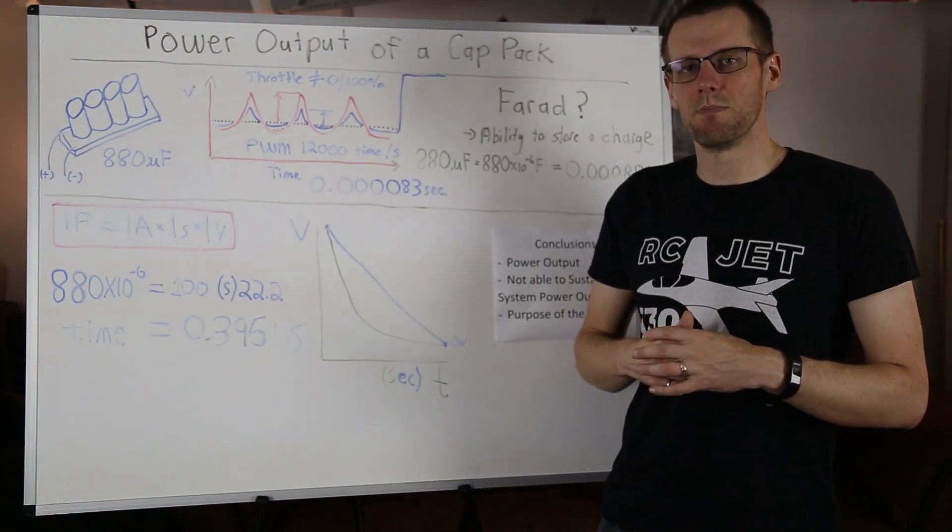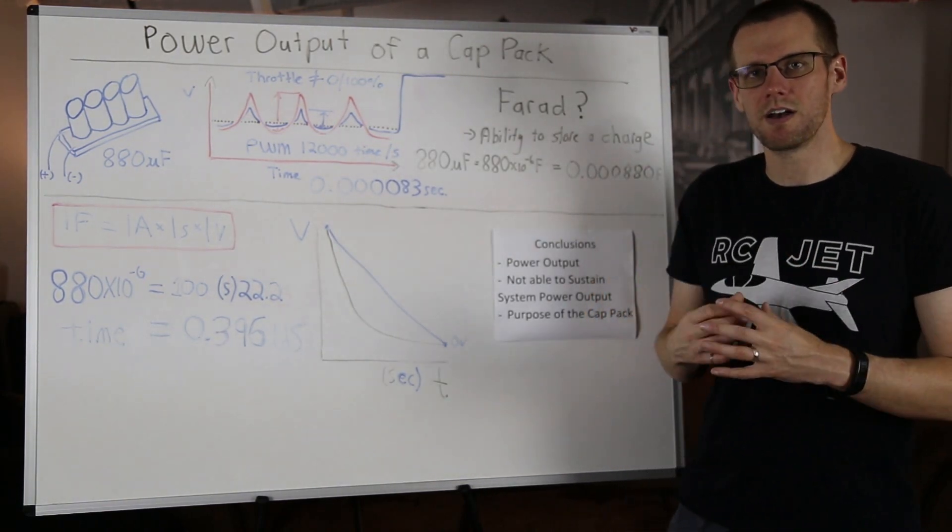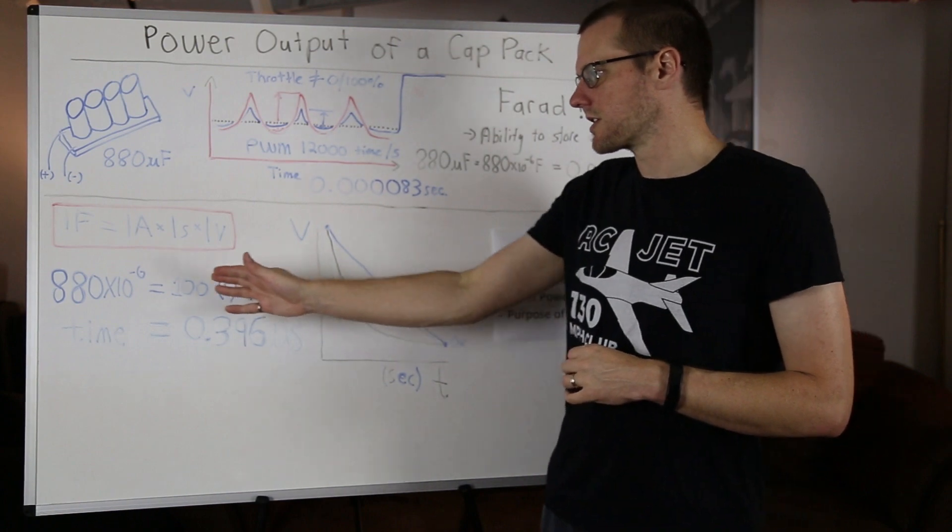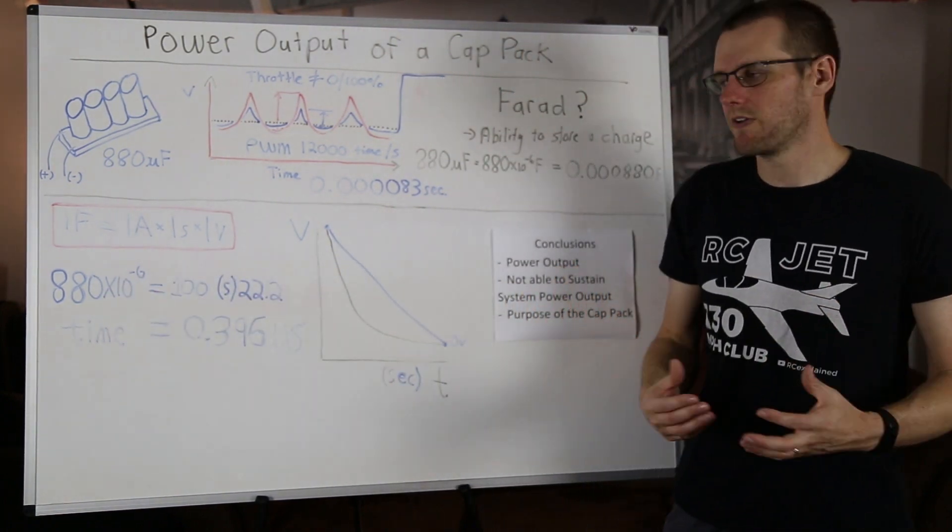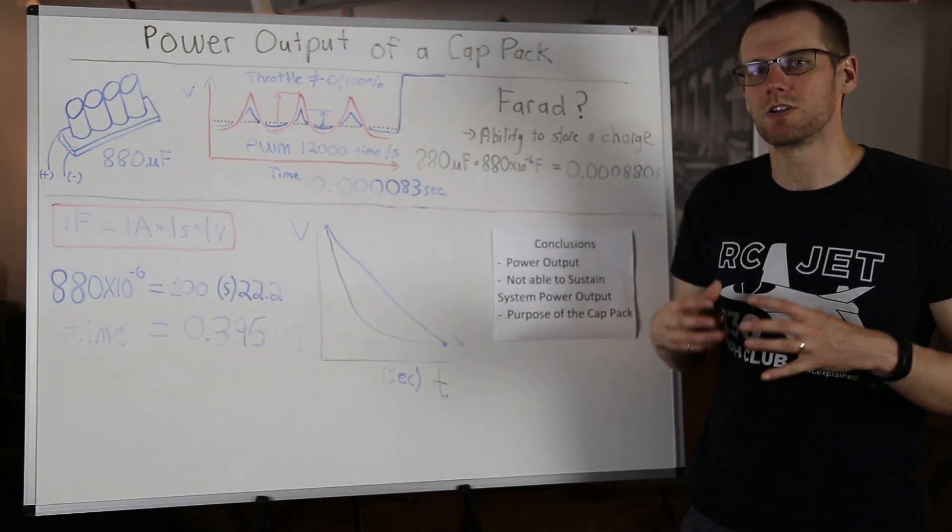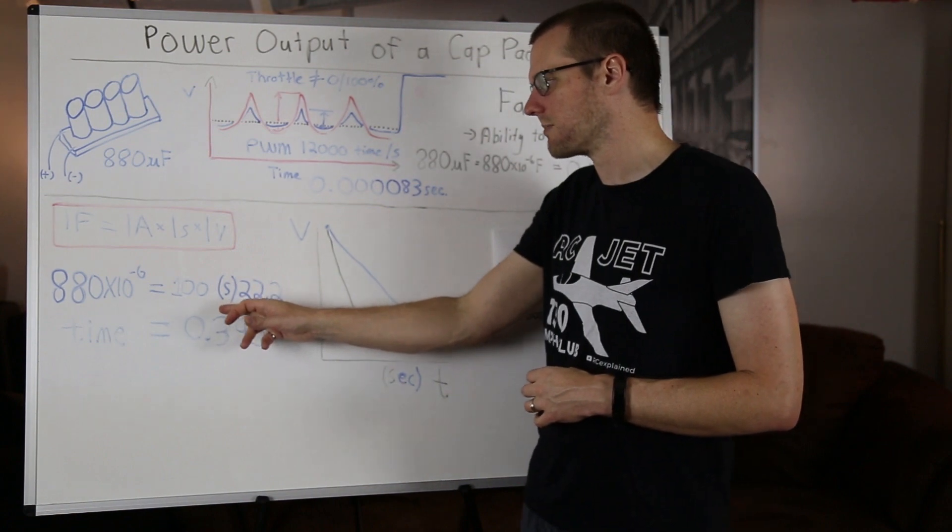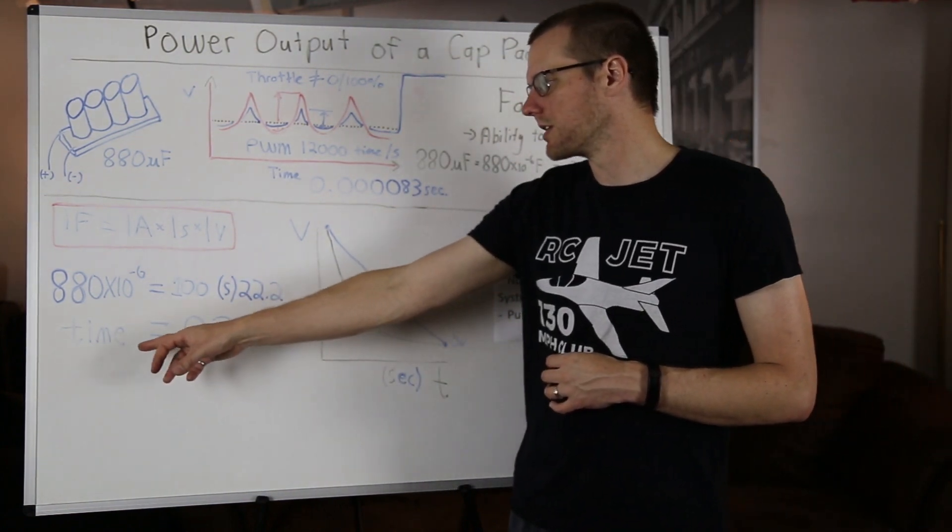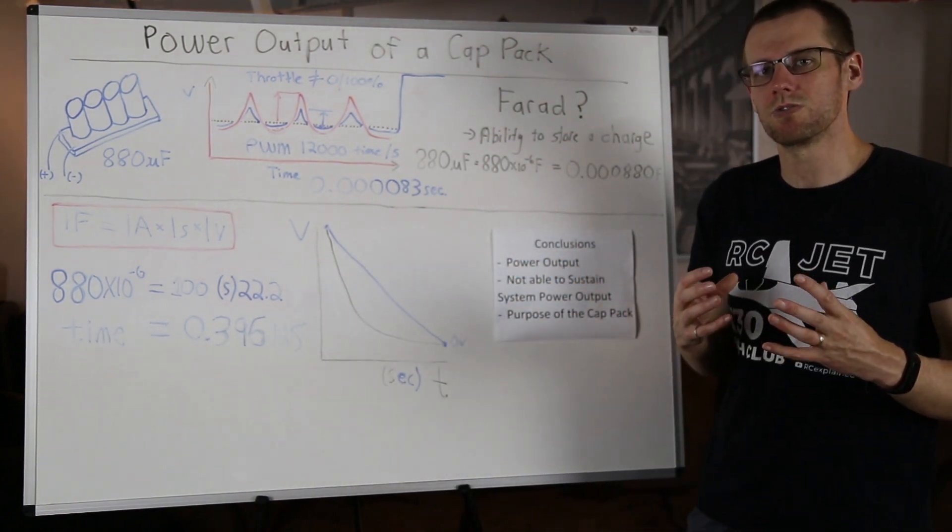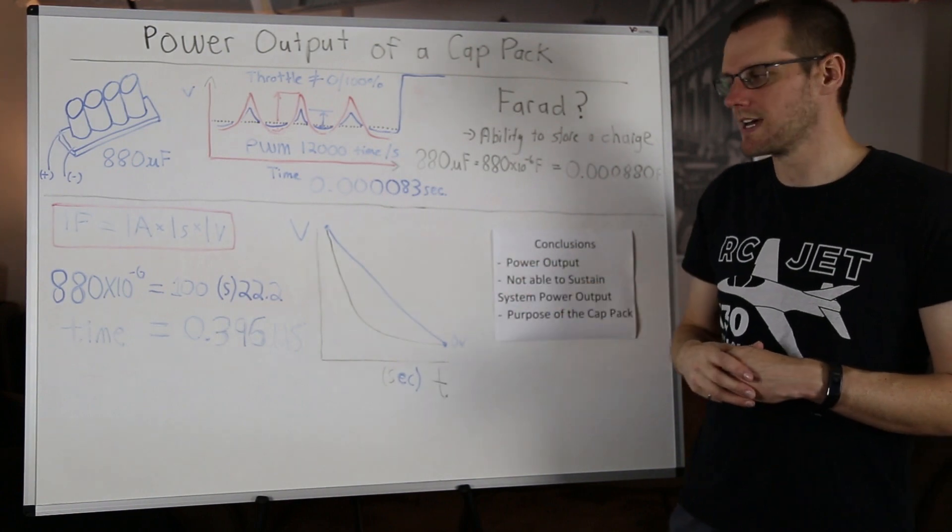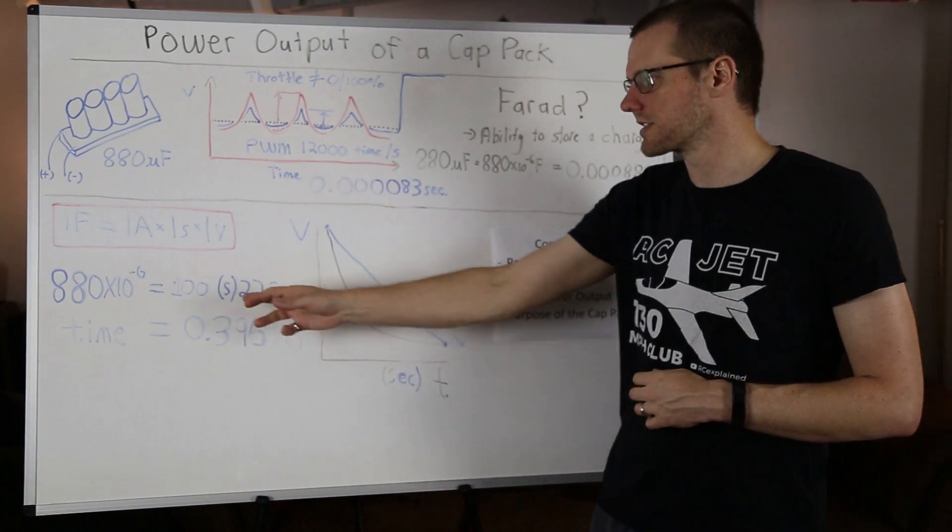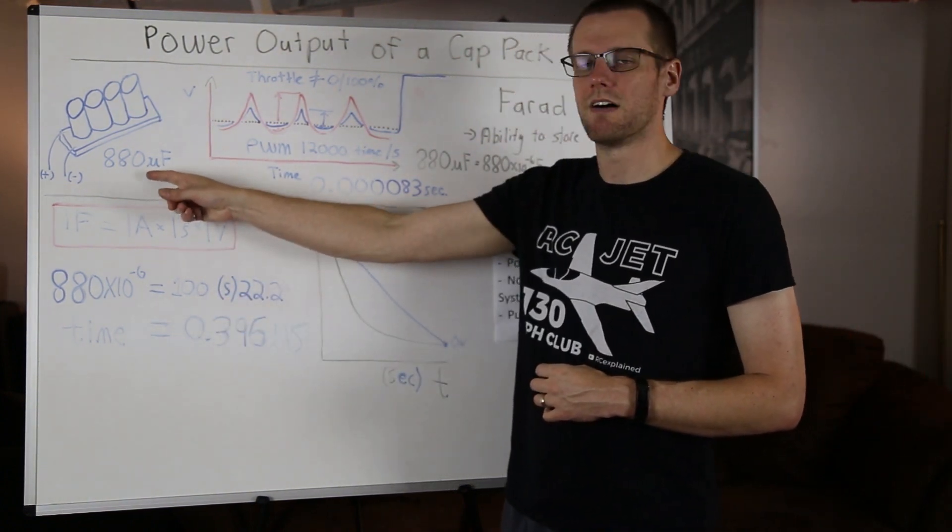Well, what's great about capacitors is their ability to dump a lot of power in a very, very, very short period of time. And that's what we're going to see here. So this capacitor here is 880 times 10 to the negative 6 farads, and we're going to equal that to the 100 amps. So we substitute 100 in there, and we substitute our 22.2, and then we're solving for our time component, which is this value of s. Our time component is equal to 0.396 microseconds. So you can see and conclude from this that this is an extremely small time that you can actually dump this kind of power with a capacitor bank of this size.